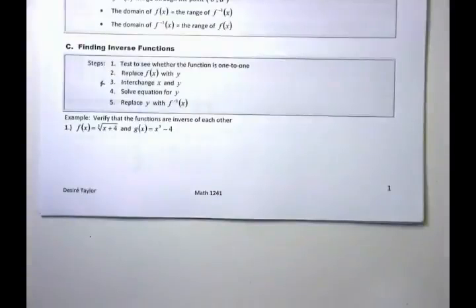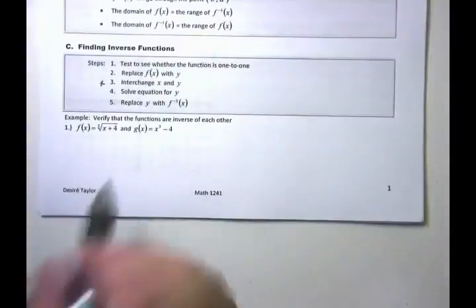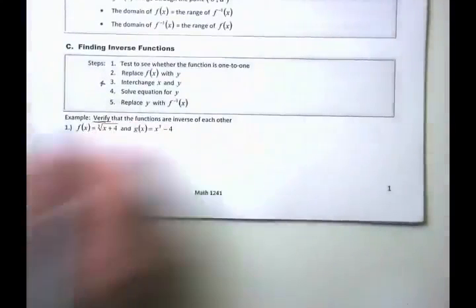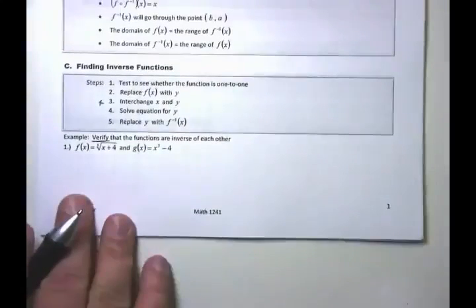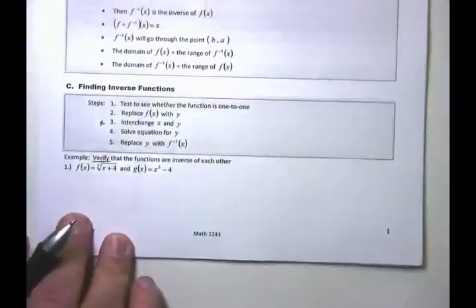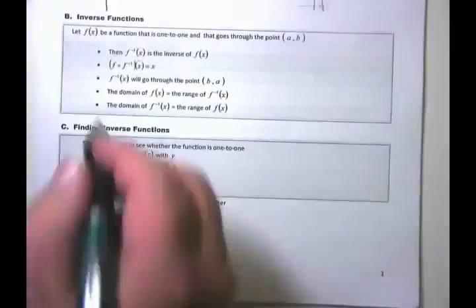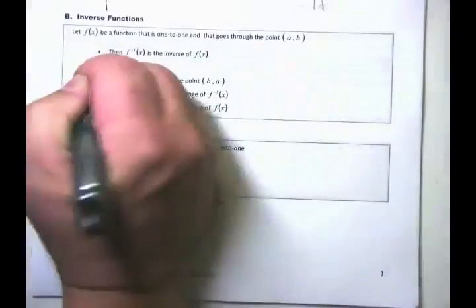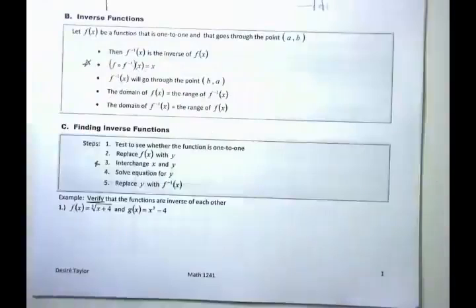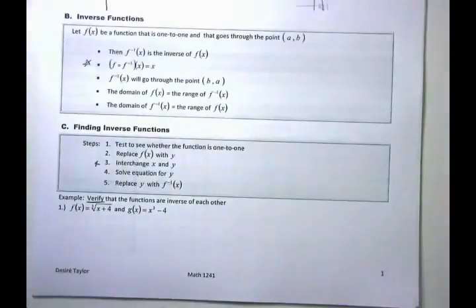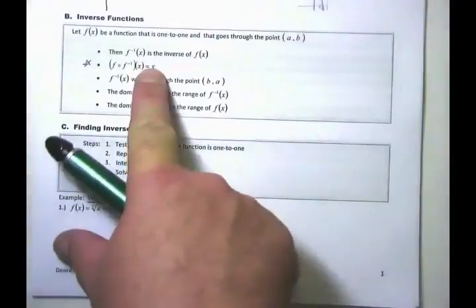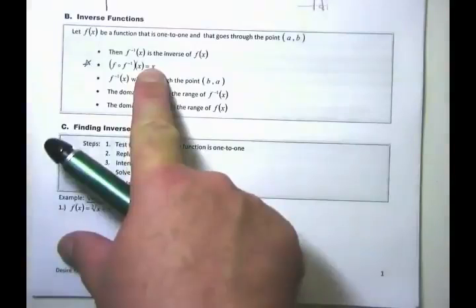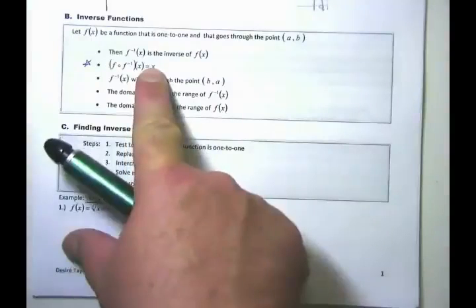The direction here says 'verify that the functions are inverses of one another.' The key word is 'verify.' The trick for checking inverses is using the composition statement: if you take the composition of the two functions and only X pops out, they're inverses. If something other than X comes out — like 2X or X plus 1 — then they're not inverses.